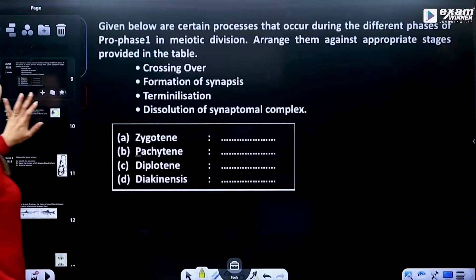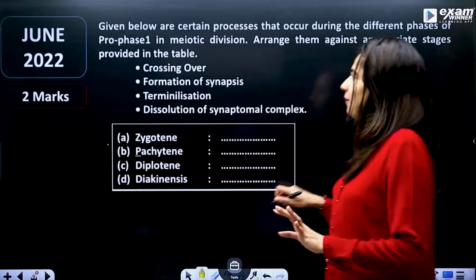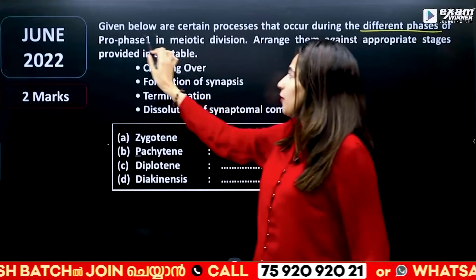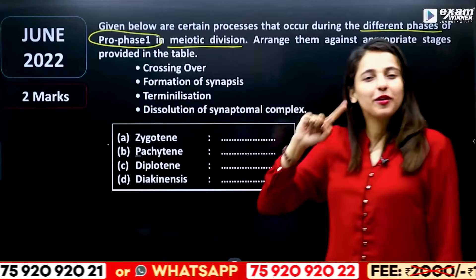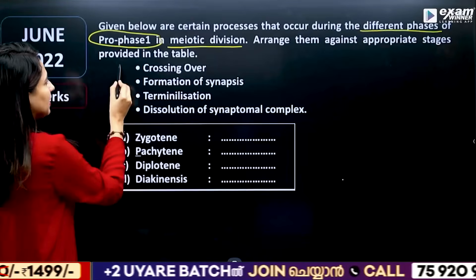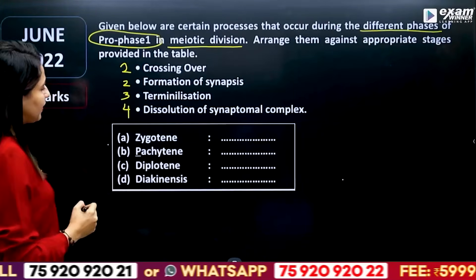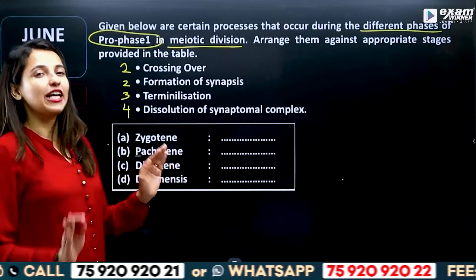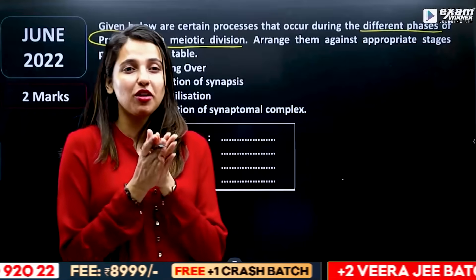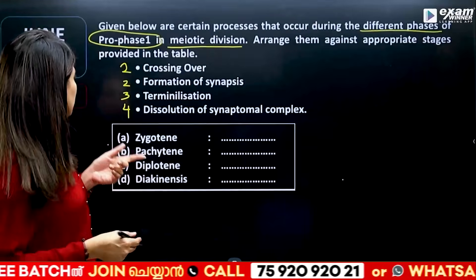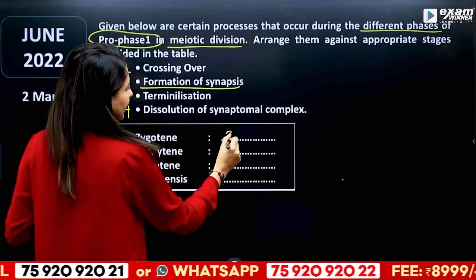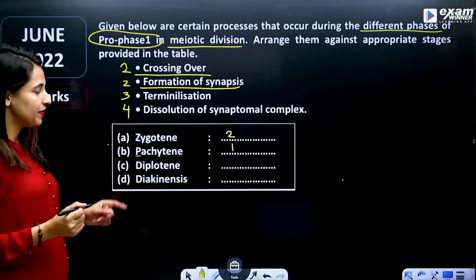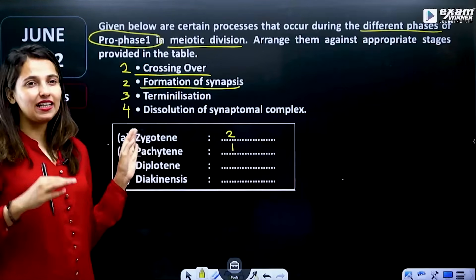In the cell cycle, given below are certain processes that occur during different phases of prophase 1 of meiosis 1. In prophase 1, we need to arrange the events in the correct order. The 4 stages are: Leptotene — pairing of homologous chromosomes; Zygotene — synapsis and formation of synaptonemal complex; Pachytene — crossing over; Diplotene; and Diakinesis.